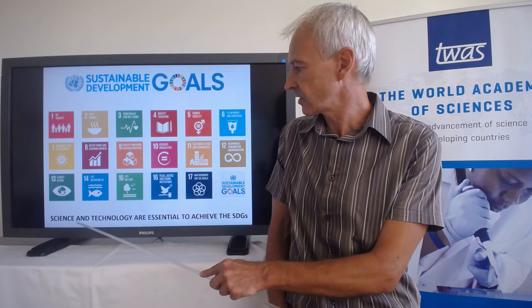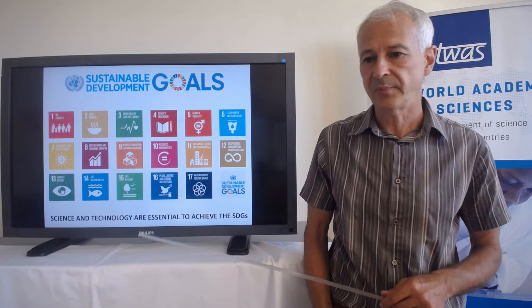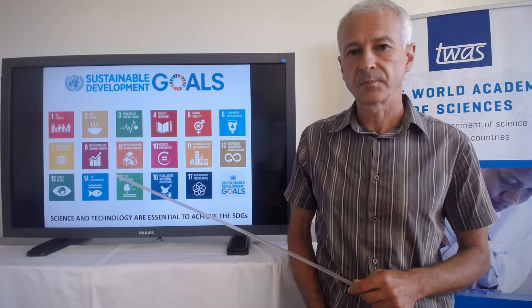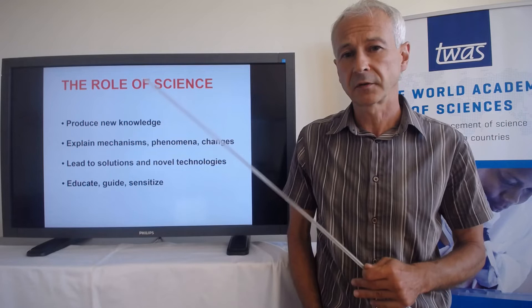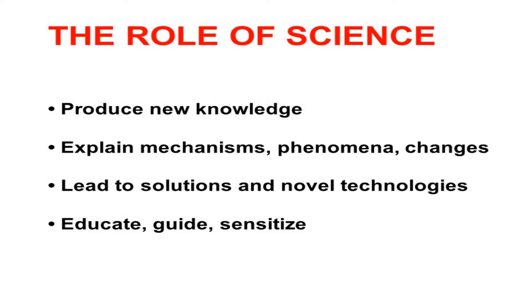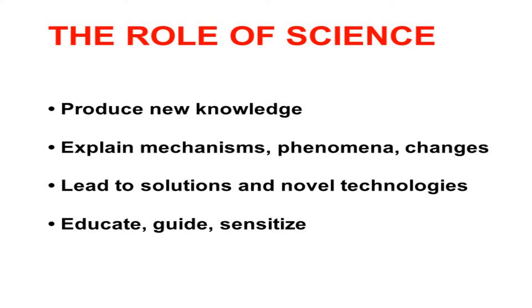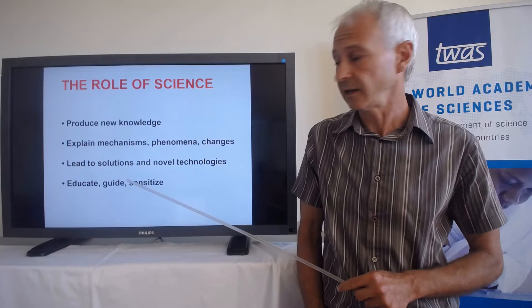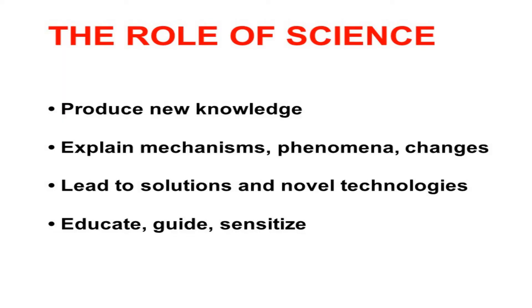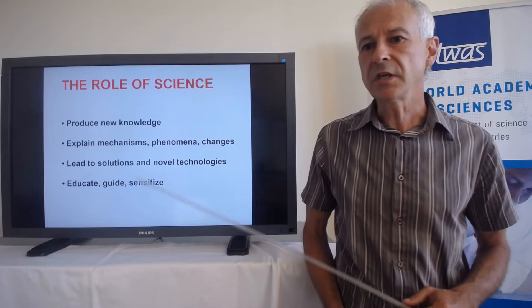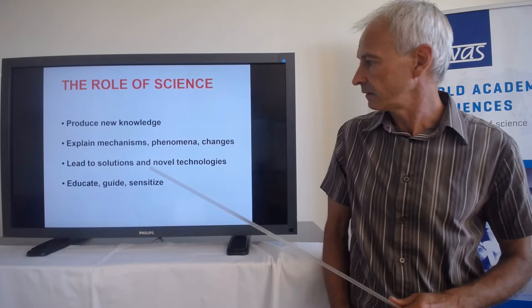Something that must be clear is that science and technologies are essential if we are to achieve and follow a path toward the SDGs. To focus on science, I'd like to give you three to four roles that science has. The first is obvious: science can produce new knowledge. With that knowledge we can explain mechanisms, phenomena, and changes. Often we can have solutions and technologies that address problems and help human lives. Perhaps most importantly, science with new knowledge can educate, guide, and sensitize.